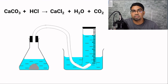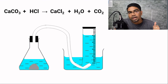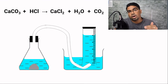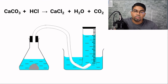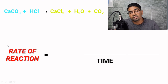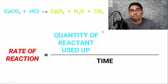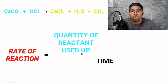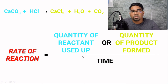Sometimes the change that reflects the rate of reaction is not measurable but observable. A good example of this is the reaction between sodium thiosulfate and acid, which I will go through in a separate video. If you take the time taken for a specific observation to take place, you can get the rate of reaction by calculating 1 over time. The rate of reaction is either the quantity of reactant used up, as seen in the change in mass or concentration of the acid, or the quantity of product formed, as seen in the increase in the volume of carbon dioxide gas per unit time.